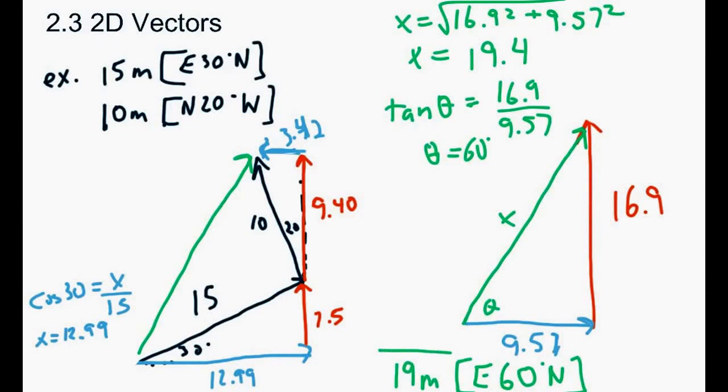And that's it. So you can see with this question, we sort of did two steps. First step was break the original vectors into its two components, then combine those into one new triangle, and then solve that new triangle for the hypotenuse and the angle.